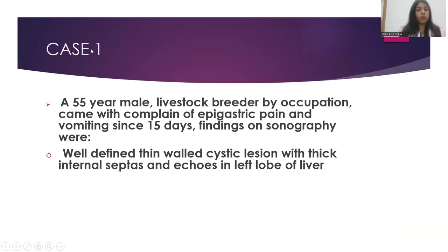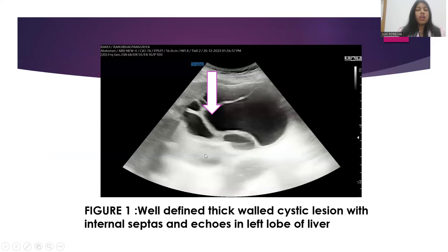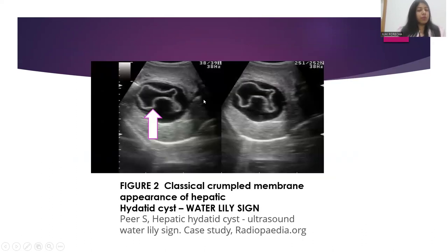Case 1: A 55-year-old male livestock breeder presented with complaints of epigastric pain and vomiting for 15 days. Sonography findings showed a well-defined thick-walled cystic lesion with internal septae and echoes in the left lobe of the liver — classical liver hydatid. Another classical appearance seen in liver hydatid is the crumpled membrane, or the water lily sign, frequently encountered in many cases.